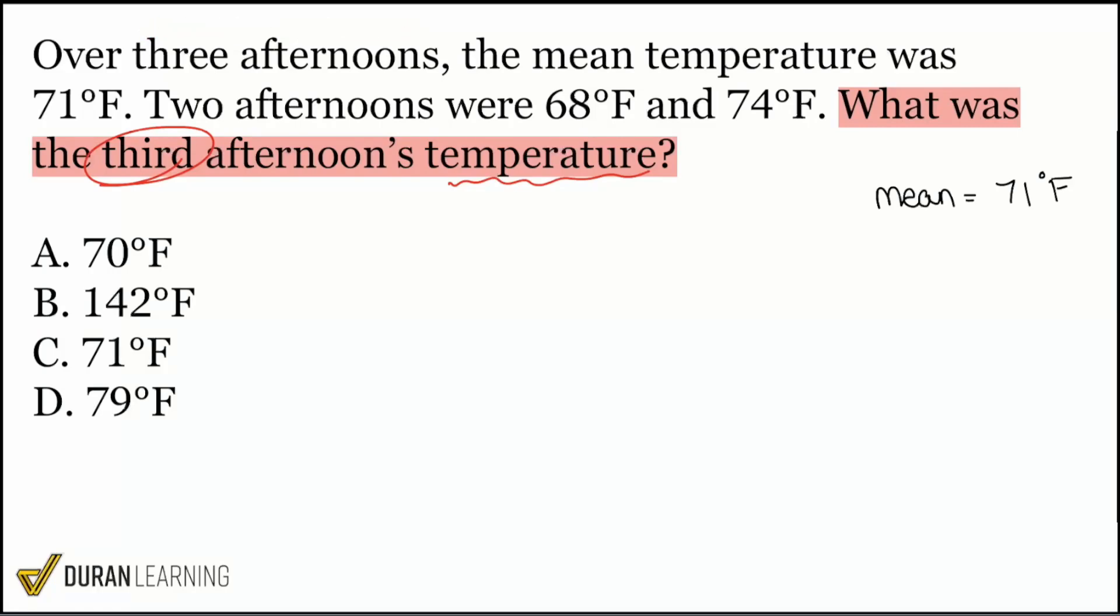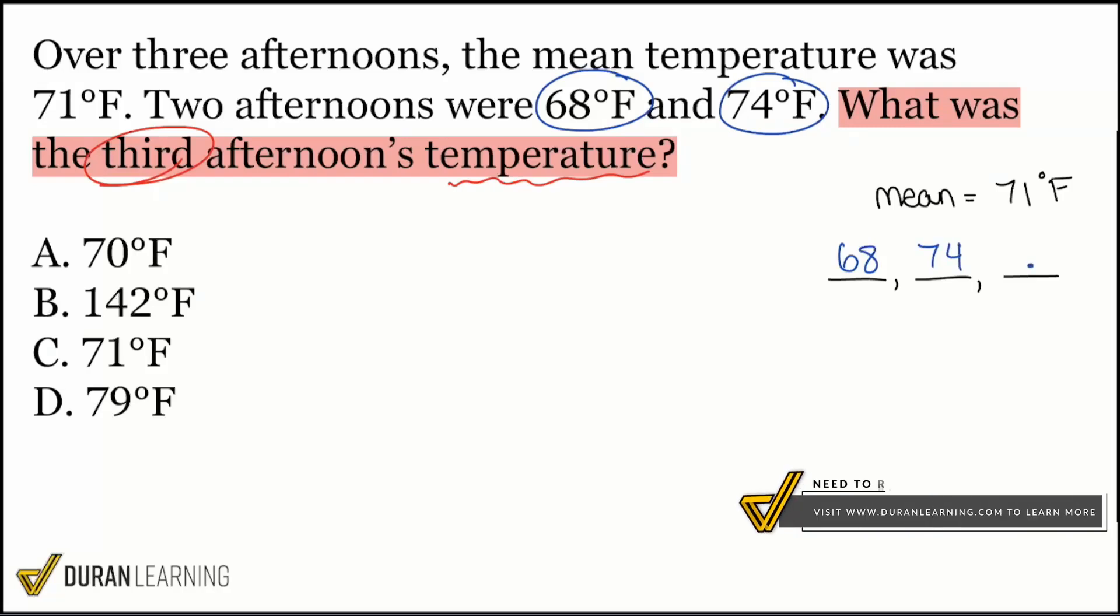And so I'll have one, two, and three. And I see that the two afternoons that I'm given are 68 degrees Fahrenheit, and 74 degrees Fahrenheit. So we're looking for that final temperature.